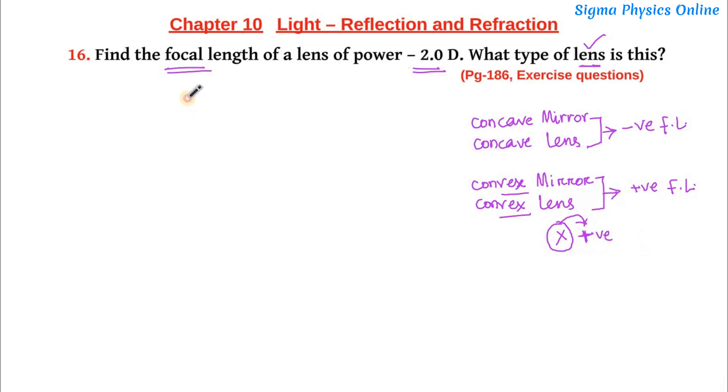So let's solve this question. The power of this lens is given as minus 2.0 D or it's simply minus 2 D. Now we know the power is the reciprocal of the focal length expressed in meters. So here if I take the focal length to the other side I get 1 by P.